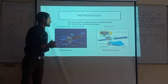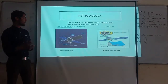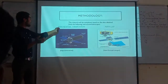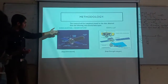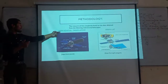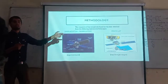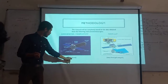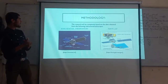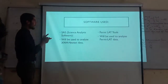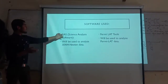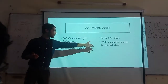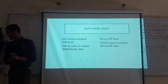Methodology: The research will be completely based on data obtained from the following instruments. The two telescopes we will be collecting data from are the XMM-Newton Observatory and the Fermi LAT. The XMM-Newton Observatory will be used to study X-rays emitted from the blazar, and the Fermi LAT will be used to study gamma rays. Data was downloaded from the European Space Agency and the Fermi LAT site. The software to be used are SAS — Science Analysis Software — for XMM-Newton data, and Fermilab tools for Fermi LAT gamma-ray data.